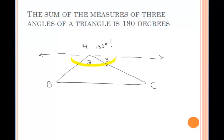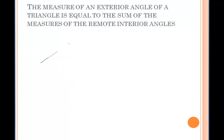Since we're working with those parallel lines, we can get some congruent angles as a result. We can say that angle 1 is congruent to angle B because those are alternate interior angles, and that angle 3 is congruent to angle C because that's another pair of alternate interior angles. So we can put 1 by angle B and 3 by angle C. Therefore, angle 1 plus angle 2 plus angle 3 must equal 180 degrees.